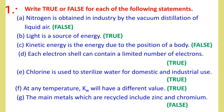Number one: write true or false for each of the following statements. A: Nitrogen is obtained in industry by the fractional distillation of liquid air.